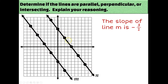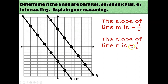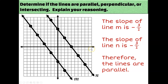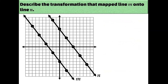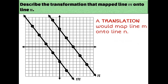Let's do the same thing for line n. Picking any two points, starting at the intercept I go down three, right two — so the slope of line n is also negative three halves. Since these two slopes are equal to each other, we say that the lines are parallel. And what we're learning today is that a translation would map line n onto line m. All you would have to do is scoot this line over — slide it to the right, up, left, or down — and you would end up at line m.